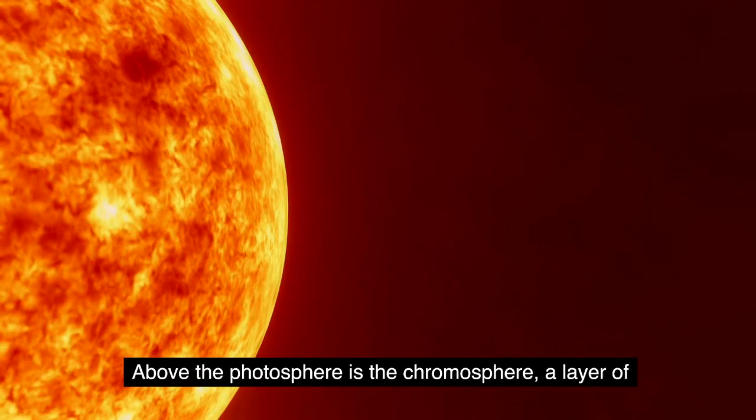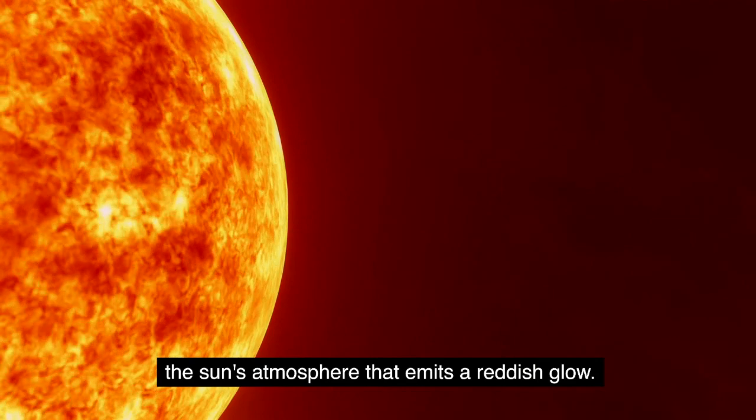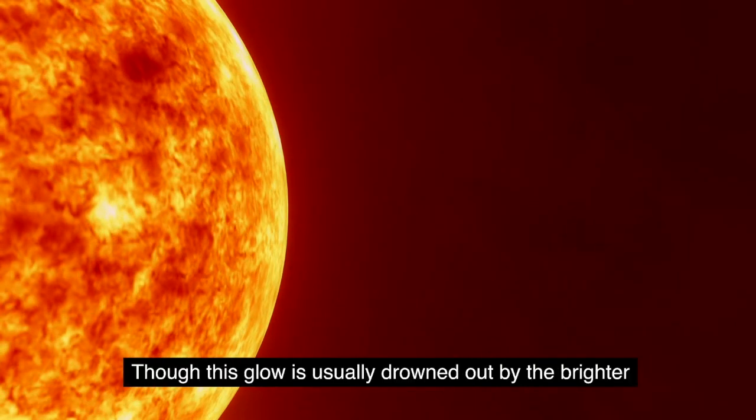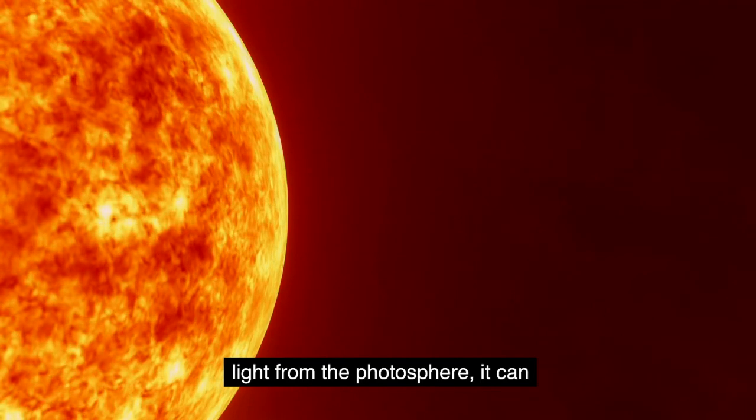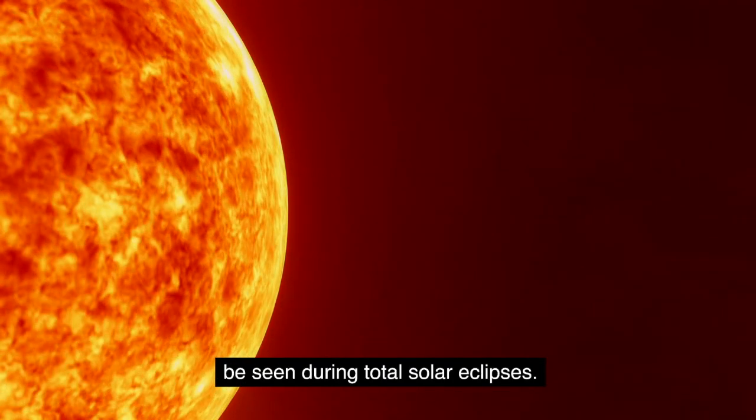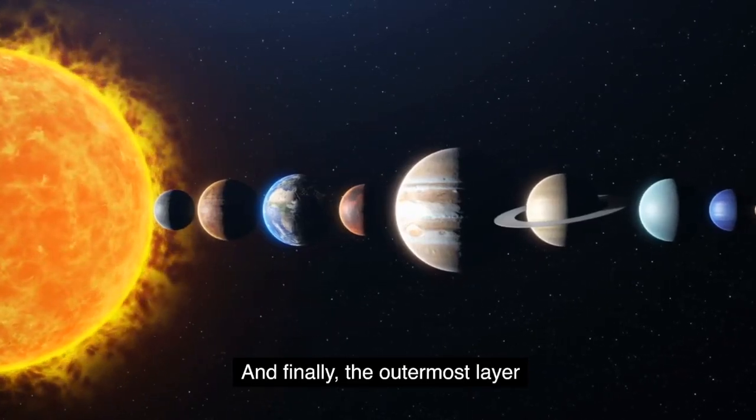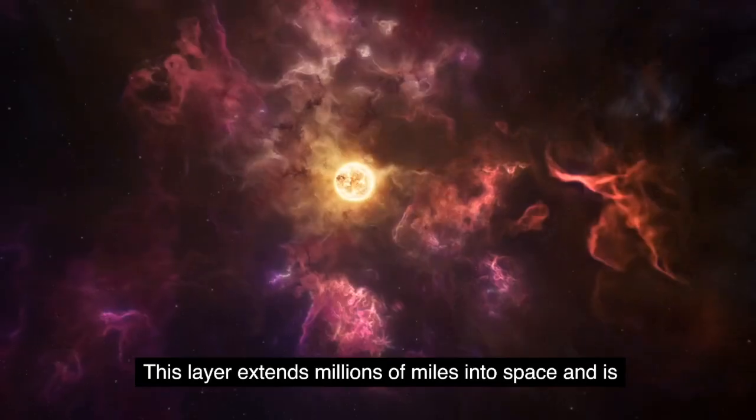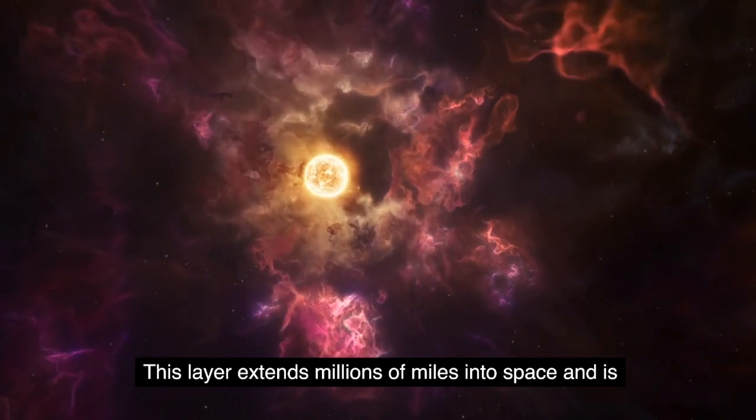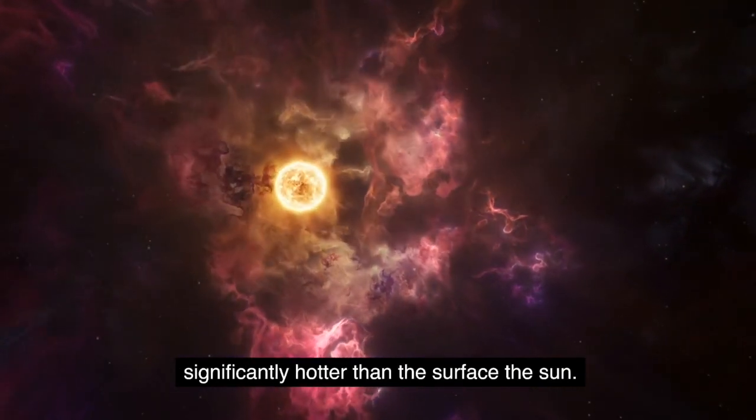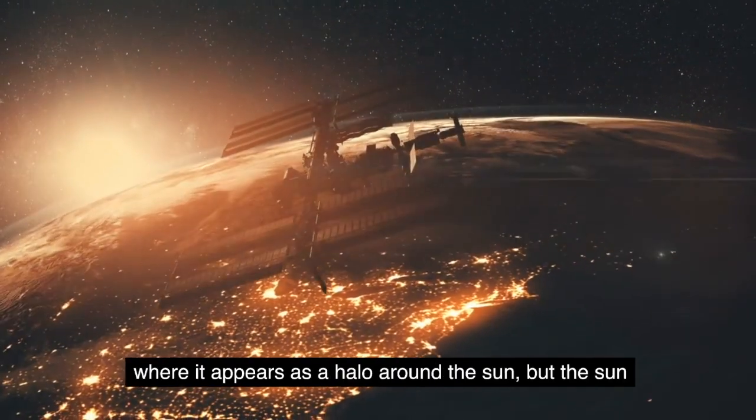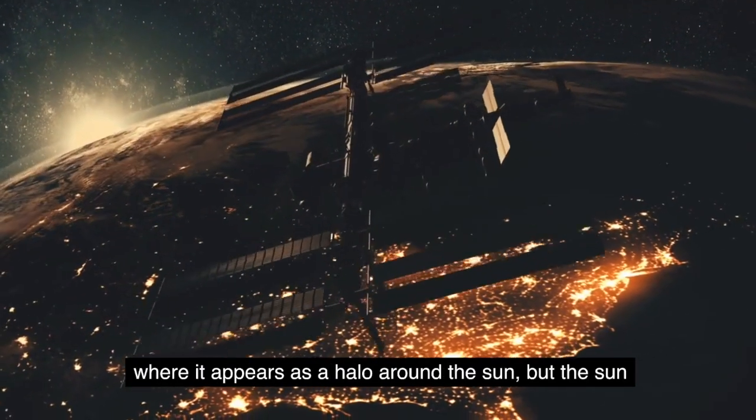Above the photosphere is the chromosphere, a layer of the sun's atmosphere that emits a reddish glow. Though this glow is usually drowned out by the brighter light from the photosphere, it can be seen during total solar eclipses. And finally, the outermost layer of the sun's atmosphere, the corona. This layer extends millions of miles into space and is significantly hotter than the surface of the sun. The corona is also visible during a total solar eclipse, where it appears as a halo around the sun.